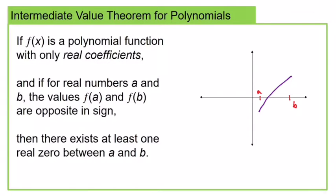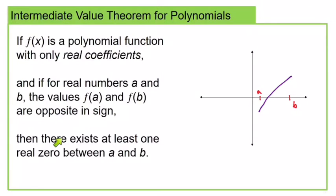Let's look at the Intermediate Value Theorem first. This says: if f(x) is a polynomial function with only real coefficients, and if for real numbers a and b the values f(a) and f(b) are opposite in sign, then there exists at least one real zero between a and b.